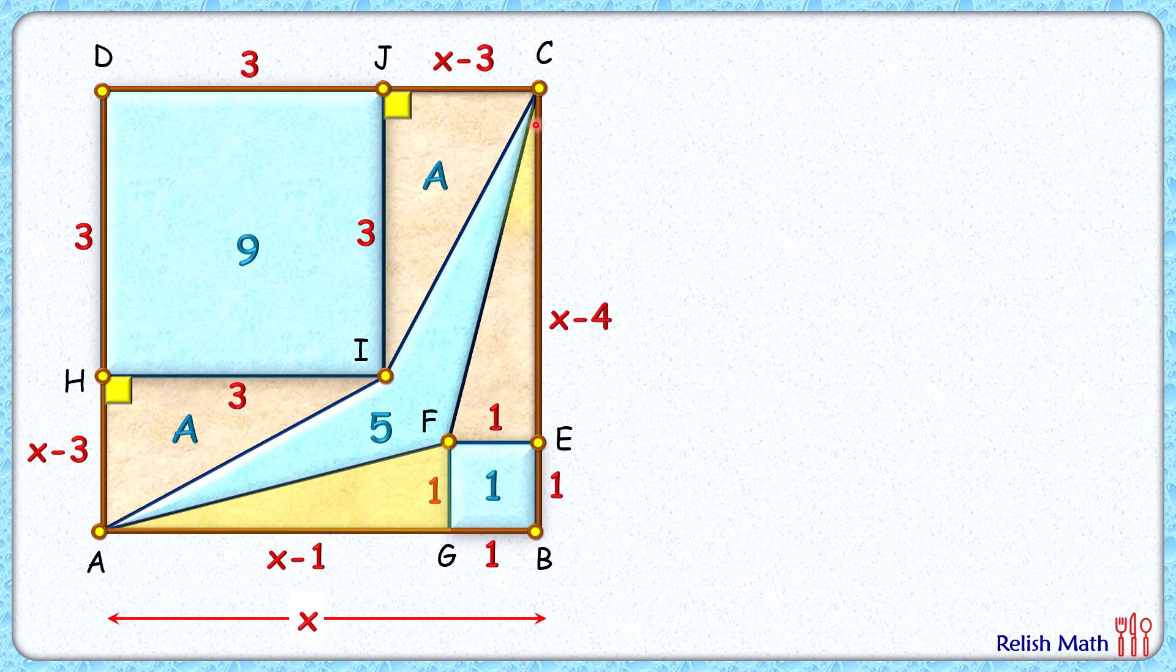Same logic: this yellow triangle and this yellow triangle are congruent to each other by Side-Angle-Side and their areas will be equal. Let's assume it's B centimeters square each. Now area of the full brown square is area of this blue region plus two times area A plus two times area B.